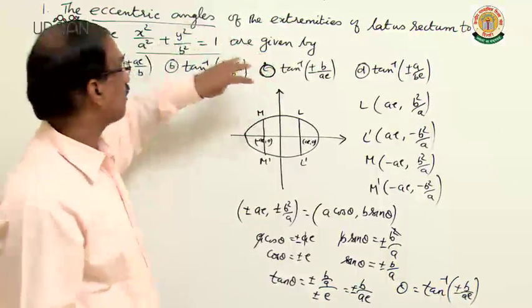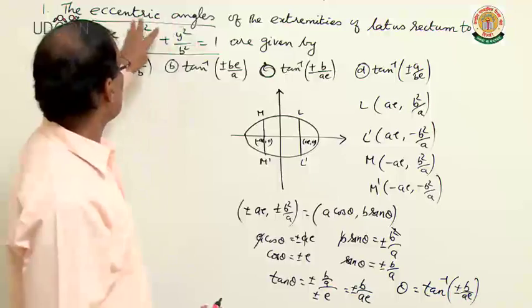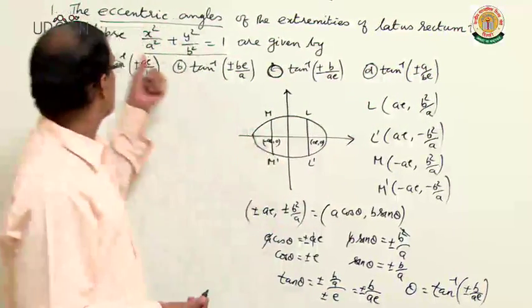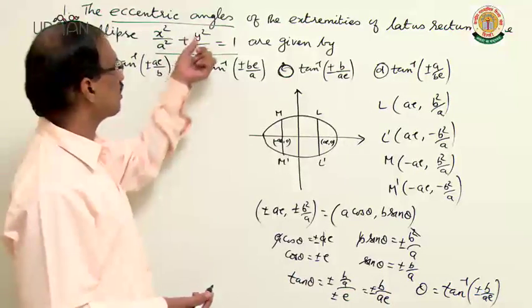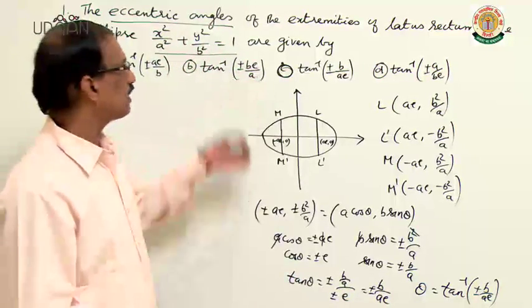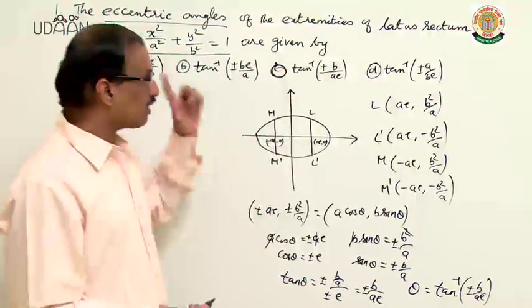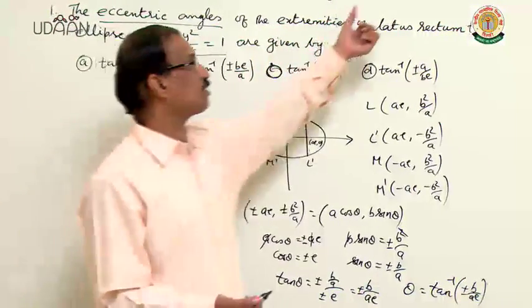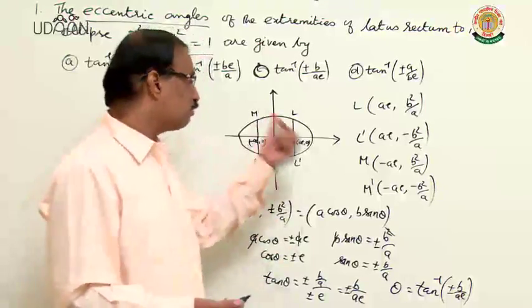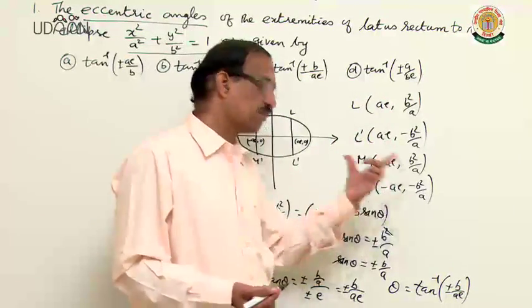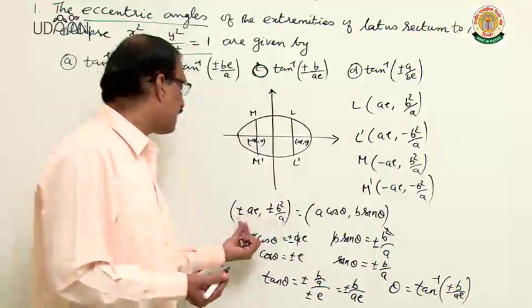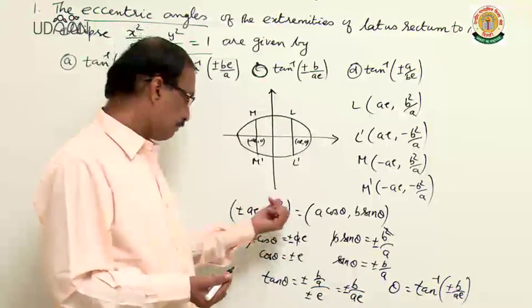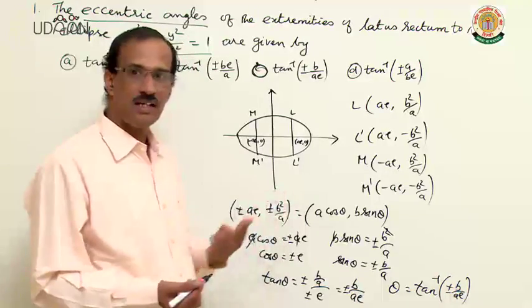So the eccentric angles of the extremities of the latus rectum to the ellipse x²/a² + y²/b² = 1 are given by tan⁻¹(±b/ae). We know the coordinates of the latus rectum endpoints are (±ae, ±b²/a).